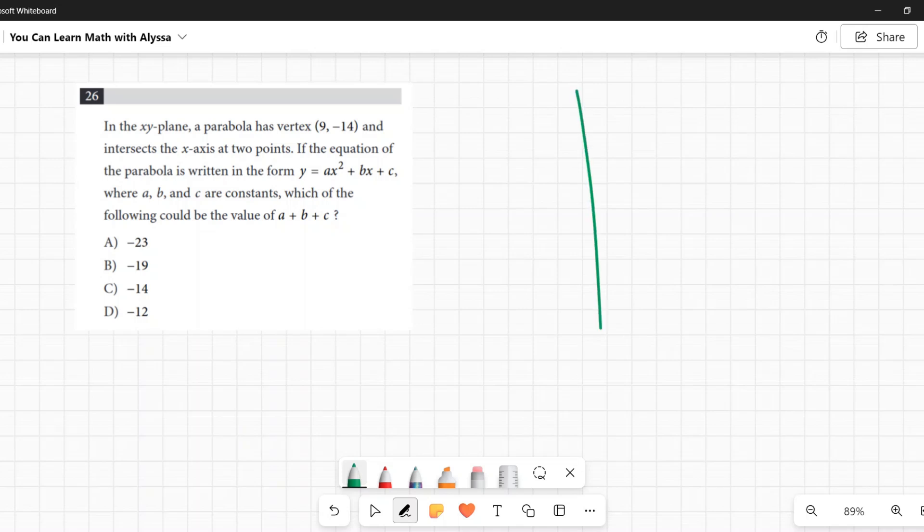Let's get started on this sucker. Here we have this parabola. Let's do a quick sketch to just visualize where it is. So it's at 9, I'm not drawing this to scale, and negative 14, and it has an intersection of the x-axis at two points. So it's opening up. So what do we know about this thing already? We know it's a positive parabola.